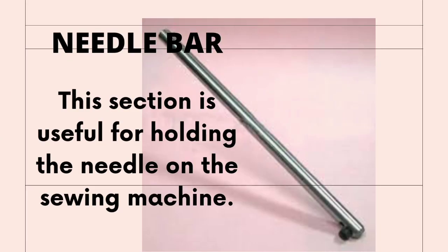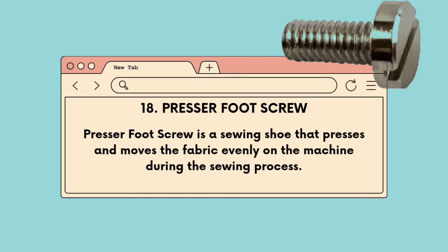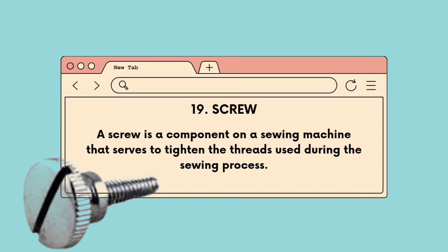Seventeenth, the needle bar. This section is useful for holding the needle on the sewing machine. Eighteenth, the presser foot screw. The presser foot screw is a sewing shoe that presses and moves the fabric evenly on the machine during the sewing process. Nineteenth, the screw. A screw is a component on the sewing machine that serves to tighten the threads used during the sewing process.